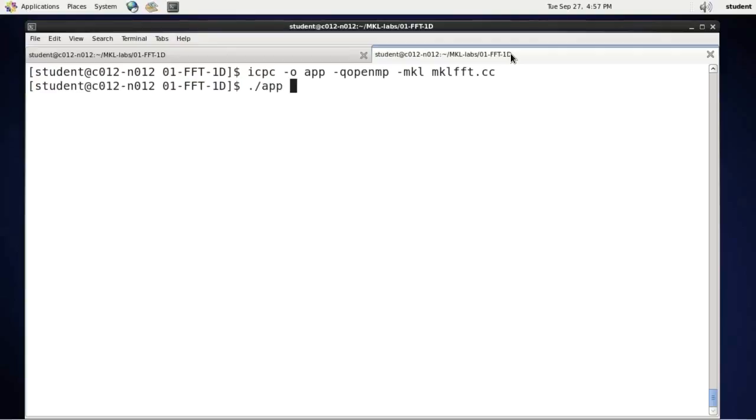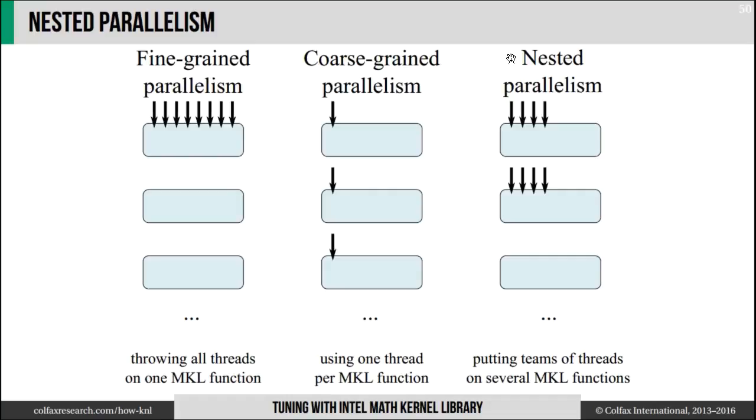And while it is running, let's take a look at what's going to happen. The number of elements in each of my transforms is 2048, but the number of datasets is 200,000. In my Xeon Phi processor, I have 64 cores.